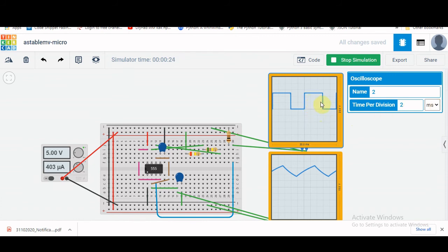So we can count the number of divisions for the on time. It is 3 divisions, so 3 times 2 will give us 6 milliseconds as the on time, and the off time will be 4 milliseconds. We can change this on time and off time by changing these resistances or this particular capacitor. So this is how the astable multivibrator using 555 timer works.